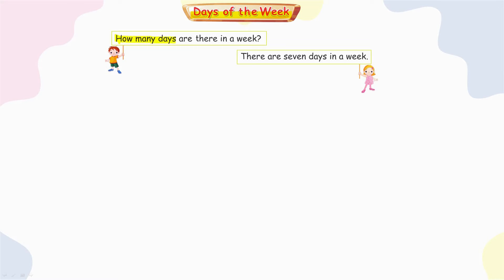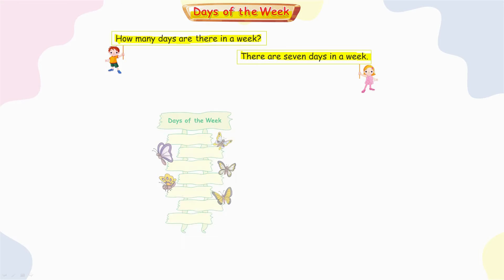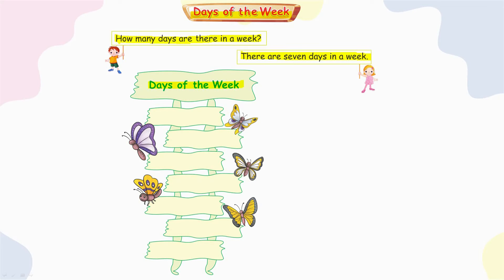How many days are there in a week? There are seven days in a week. Here are the days of the week.